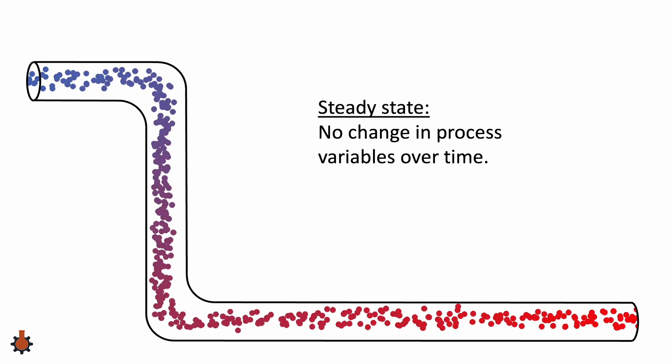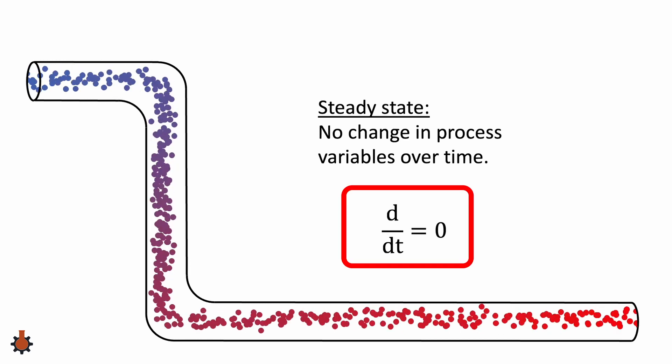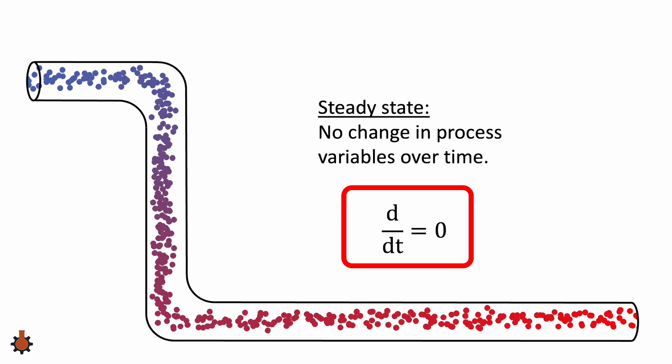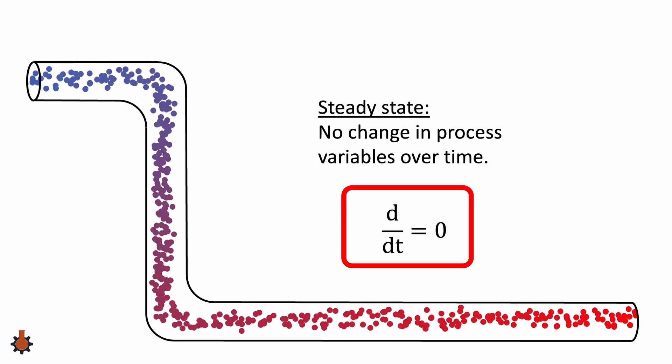So again, steady state is when a process variable does not change with time. For a more mathematical definition, we can write this as d/dt equals zero, where on the numerator we have any of the process variables that we've mentioned before.